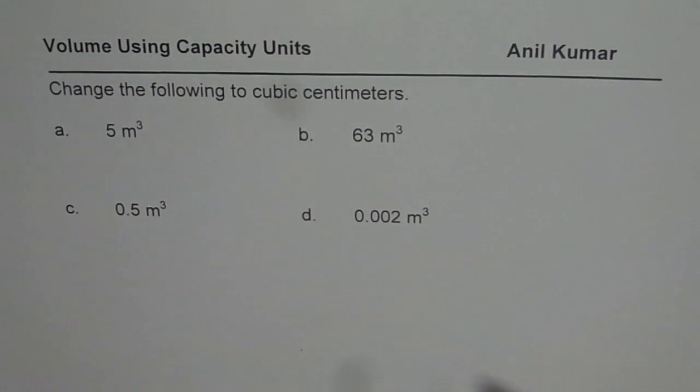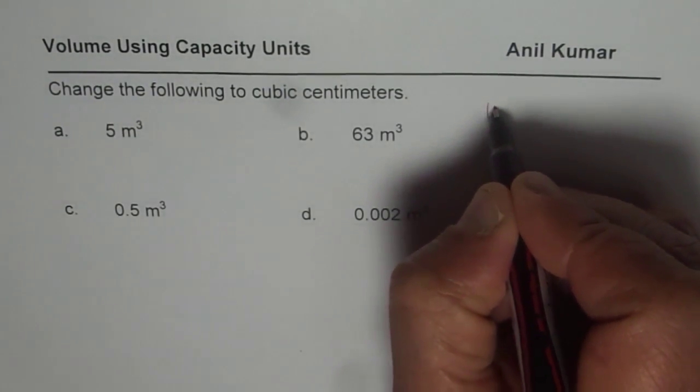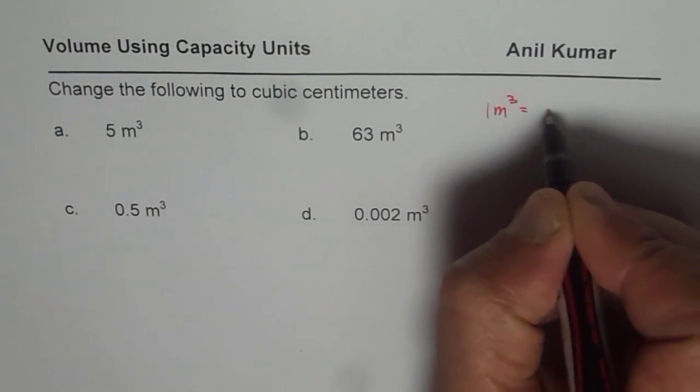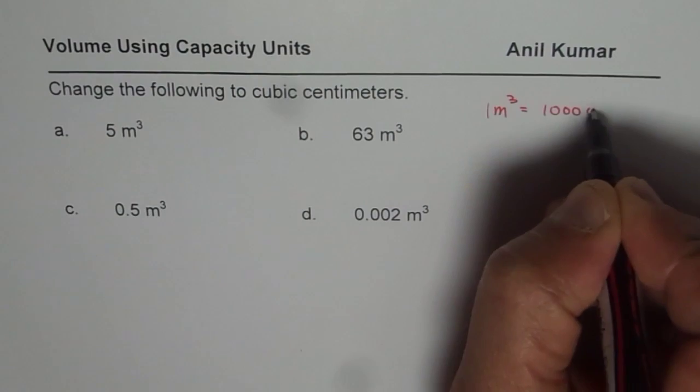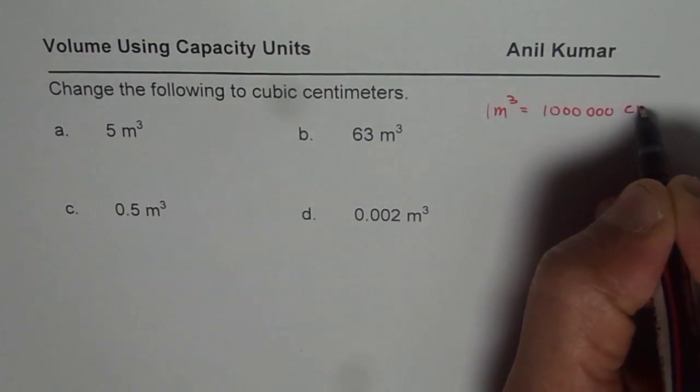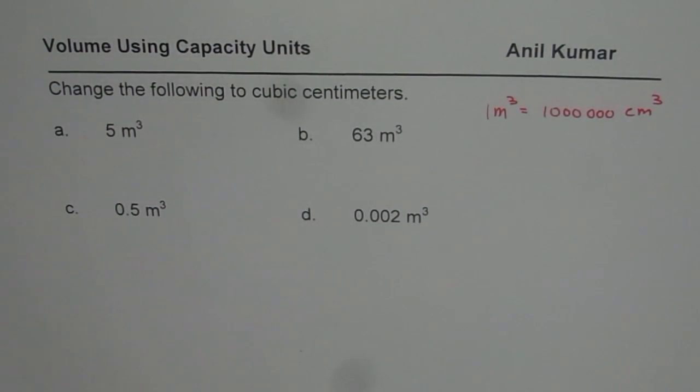You can pause the video to answer the question. Here is the conversion factor: 1 meter cube equals 1,000,000 centimeter cube. That is the relation between meter cube and centimeter cube.